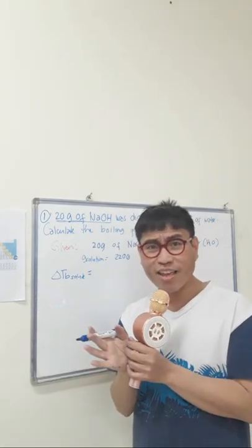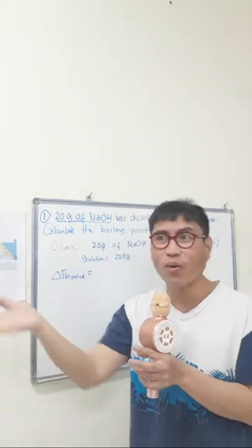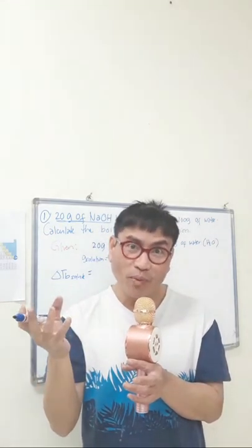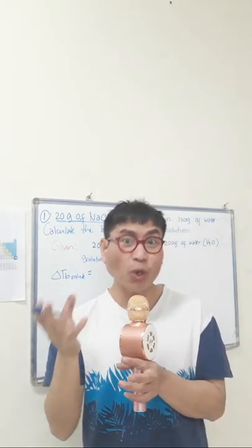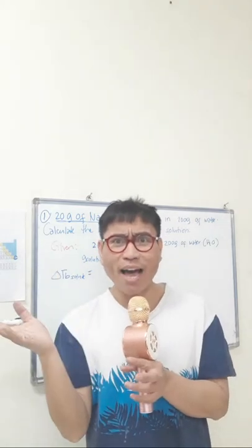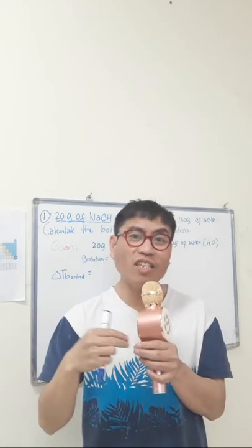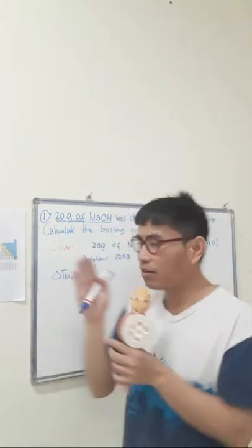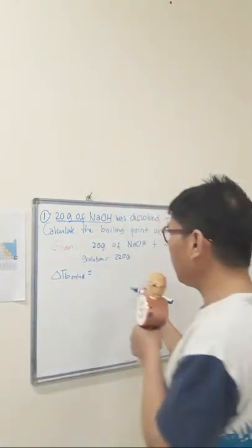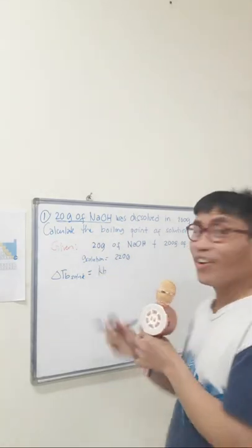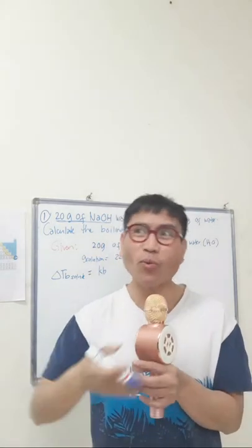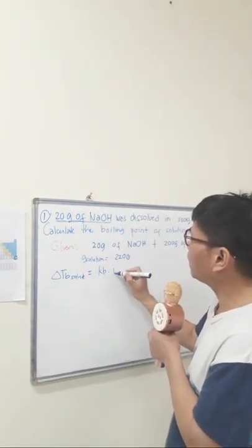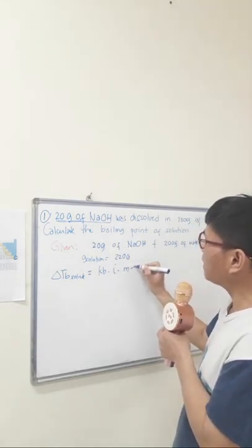This constant is also called the ebullioscopic constant — not commonly used in classroom instruction, where instructors normally say 'boiling point elevation constant' or 'freezing point constant.' I'm teaching you the alternative term because future examinations sometimes use it. The boiling point elevation constant K_b is equal to the ebullioscopic constant. So the formula is: K_b times i times molality.